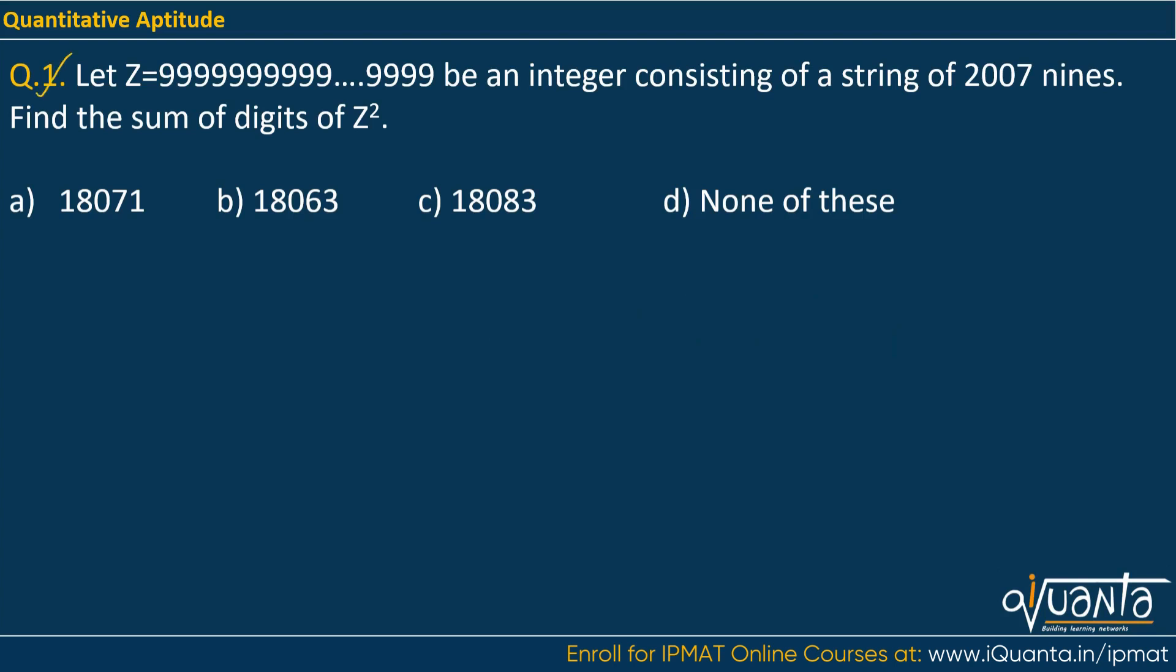The first question is: let Z equal 999...9999 be an integer consisting of a string of 2007 nines. So the digit 9 has been written 2007 times in this integer Z. Find the sum of digits of Z².